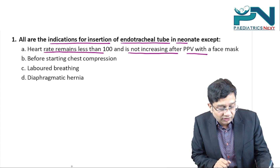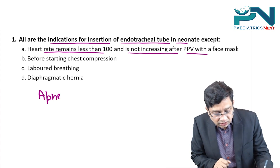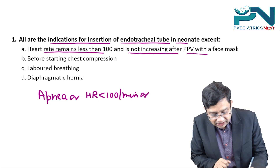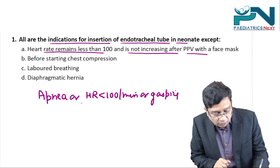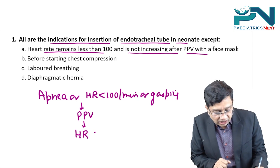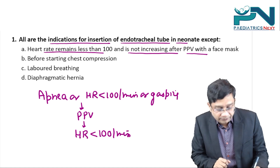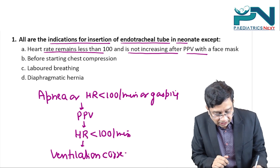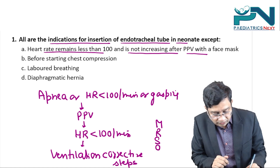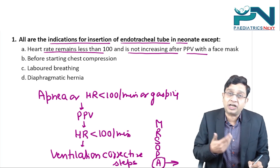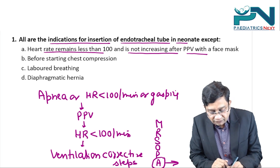Whenever there is apnea, heart rate less than 100, or the newborn is gasping, we start positive pressure ventilation. We then monitor the heart rate, and if it is still less than 100 per minute, we go for ventilation corrective steps — MR SOPA — where A stands for alternative airway, meaning either endotracheal tube or laryngeal mask. So this is definitely an indication.